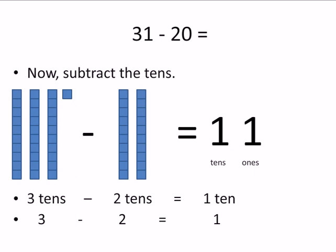And then we're going to subtract two 10s. 20 has two 10s. That's two stacks of 10s. So three 10s minus two 10s equals one 10. Three minus two equals one.